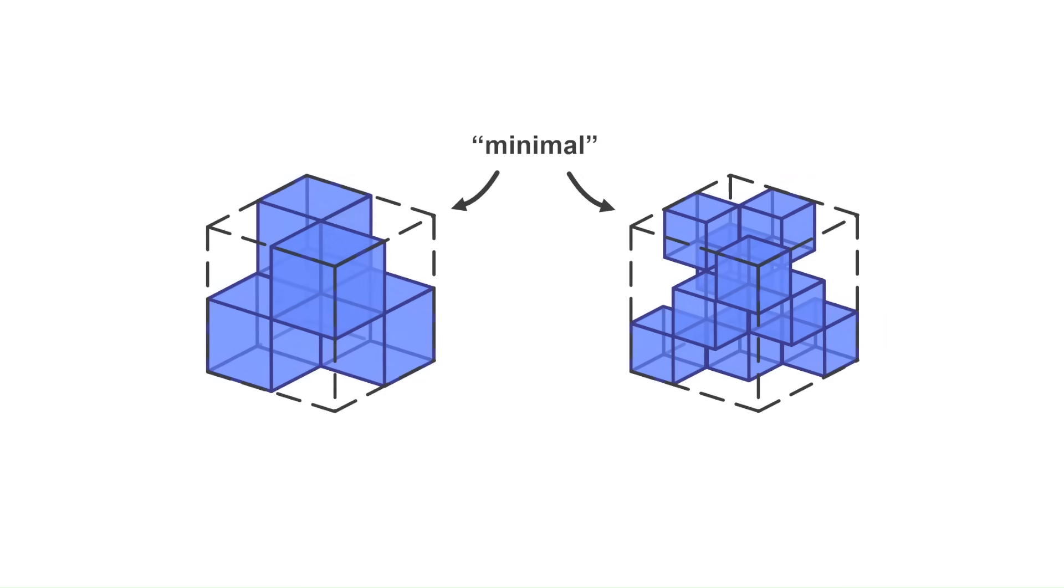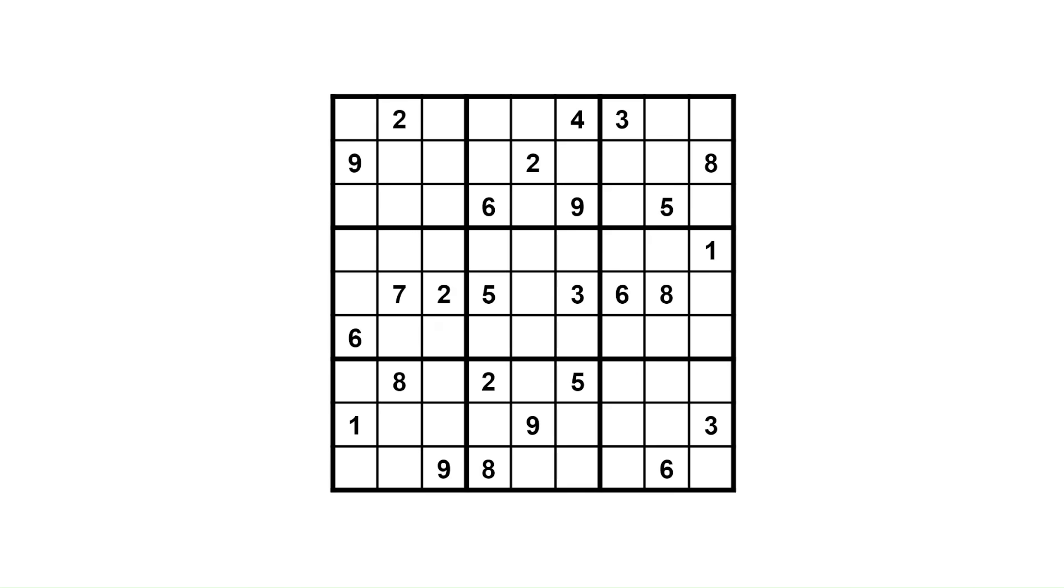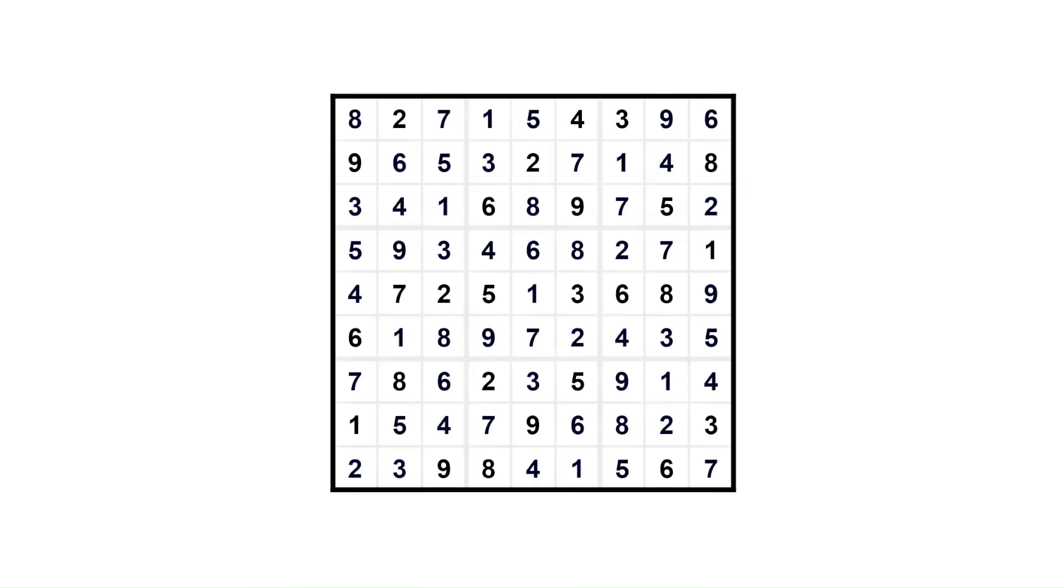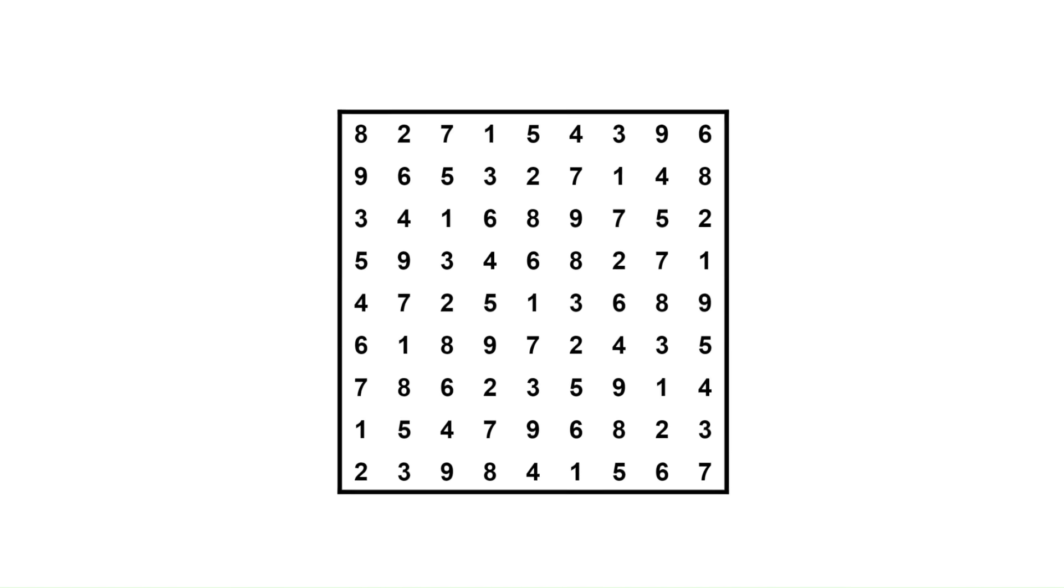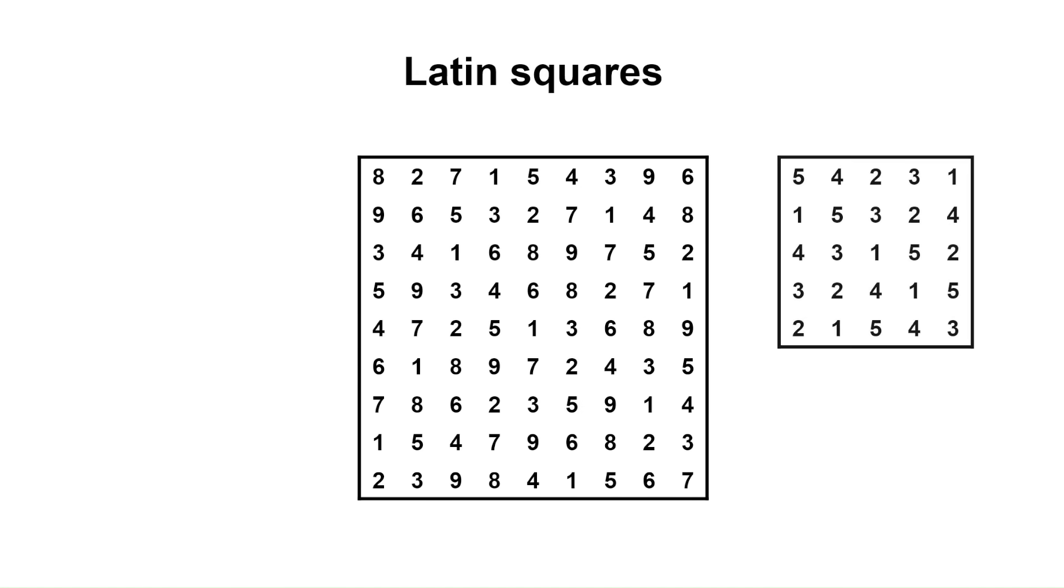This property might sound familiar if you've ever played Sudoku. When the grid is solved, each number appears exactly once in every row and every column. Grids with this property are called Latin squares, and they come in all sizes.